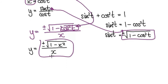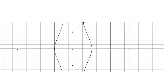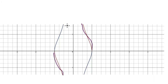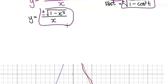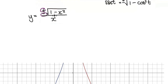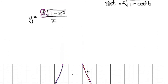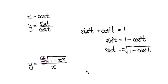So if you get a graph and plot this, the positive version of the square root gives you the red line here, and the negative version of the square root gives you the other curve. You've got the positive version and the negative version of the square root, each giving a different branch. So your final answer would be this.